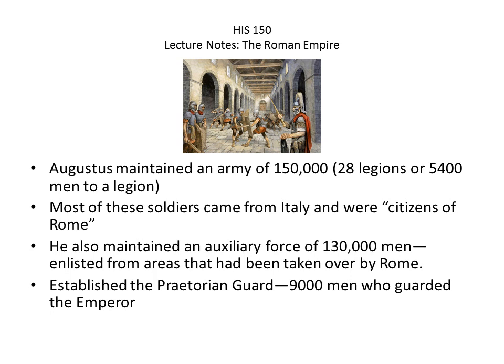Augustus maintained an army of 150,000 men — twenty-eight legions of 5,400 men each. Most soldiers came from Italy and were Roman citizens. He also maintained an auxiliary force of 130,000 men enlisted from other areas taken over by Rome. He also established the Praetorian Guard — 9,000 men who guarded the Emperor — which becomes very powerful in terms of helping emperors maintain their power base.